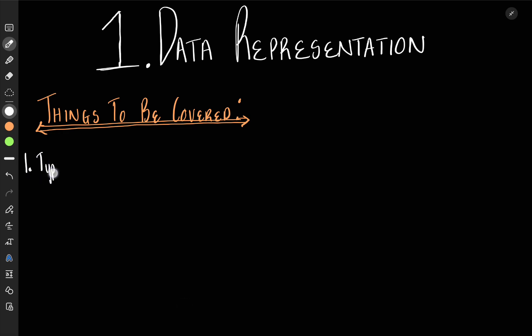First one would be the types of data. First we have to know the types of data and we group them into two broad categories. One would be qualitative, then the other one would be quantitative. So you're going to have to know this, qualitative then quantitative. And in quantitative, we are going to group it into two. One would be discrete and then the other one would be continuous.